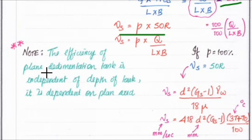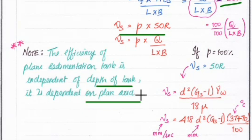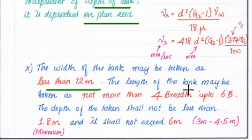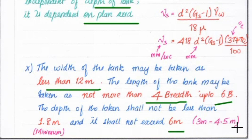It is important to note that the efficiency of the plain sedimentation tank is independent of the depth of the tank — it depends upon the plan area. The settling velocity formula (Stokes' law) is: Vs = D² × (Gs − 1) × γW / (18 × μ), or equivalently Vs = 418 × D² × (Gs − 1) × (3T + 70) / 100, where T is temperature. Design constraints: the width of the tank may be taken as less than 12 metres; the length shall not be more than 3B to 6B; and the depth shall not be less than 1.8 metres and shall not exceed 6 metres, typically 3 to 4.5 metres.